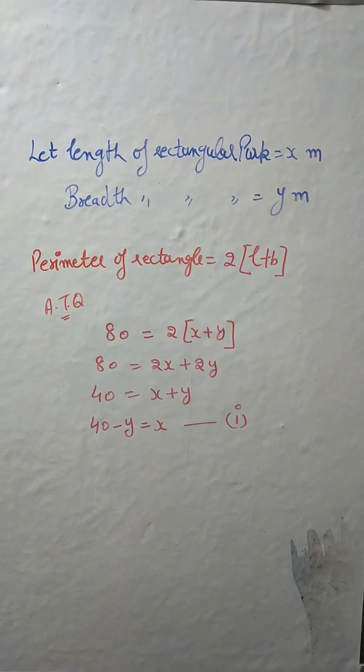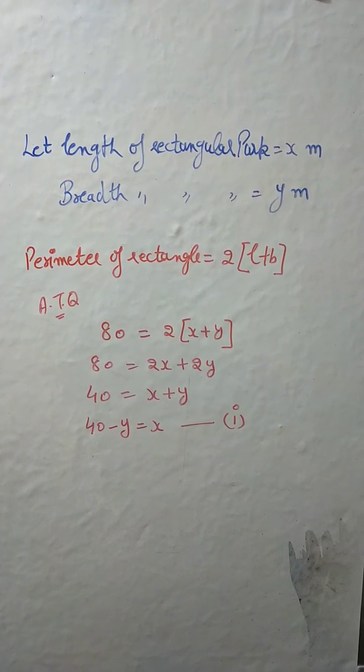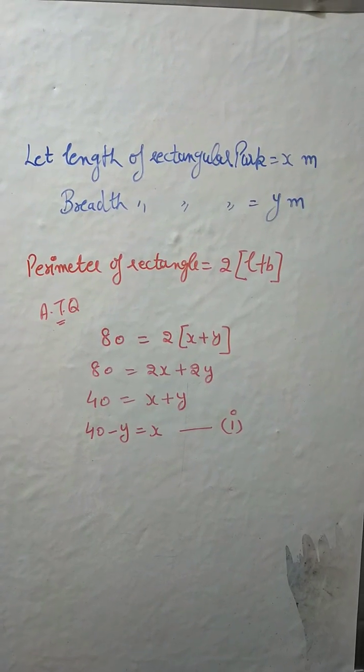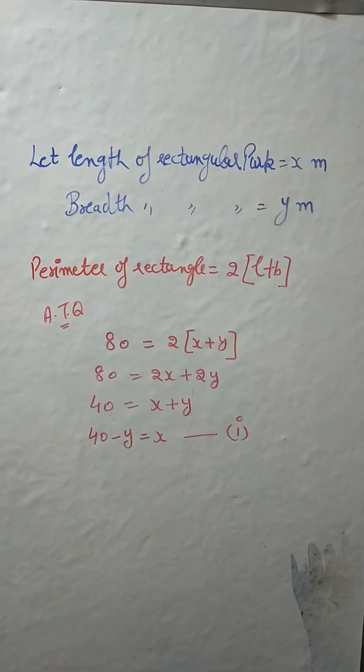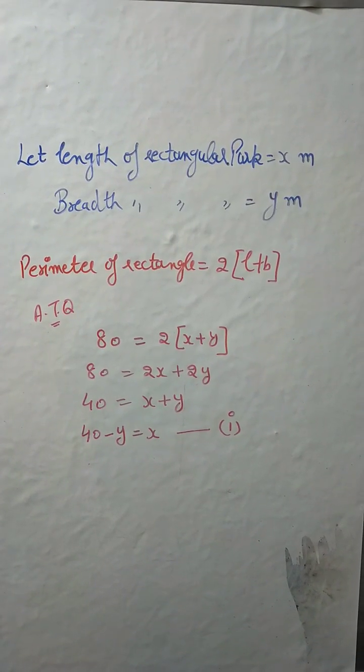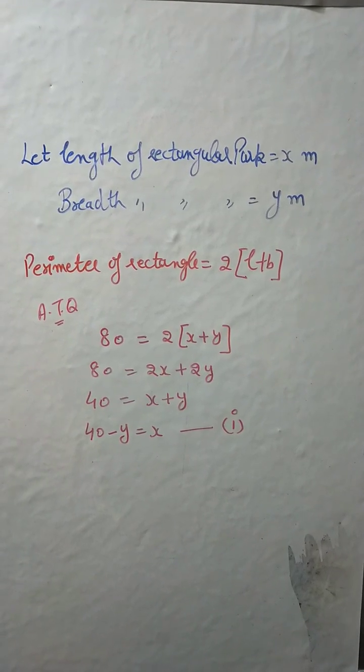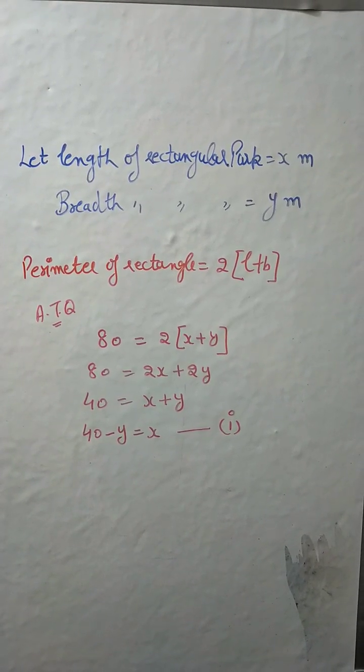Perimeter of rectangle is 2 times length plus breadth. According to the question, we are given perimeter of rectangle: 80 = 2(x + y). Now 80 = 2x + 2y.